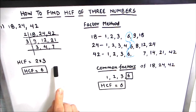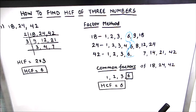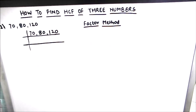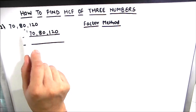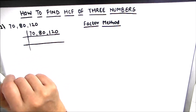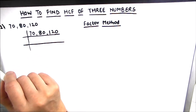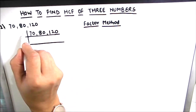This is how we find the HCF of three numbers using either the prime factorization method or the factor method. Let us solve one more example. In our second example we have three numbers: 70, 80, and 120.